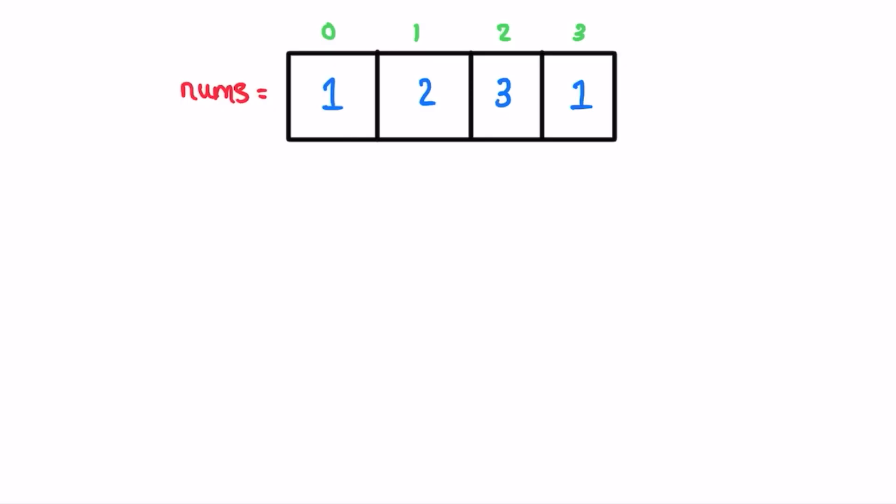Given the input array nums, we have to return the index of the peak element. We can solve this using binary search. This question is very similar to 'Peak Index in a Mountain Array' — I've already solved that; I'll leave a link in the description or you can click the top right corner icon to find that video.